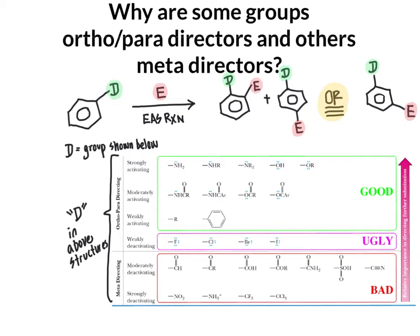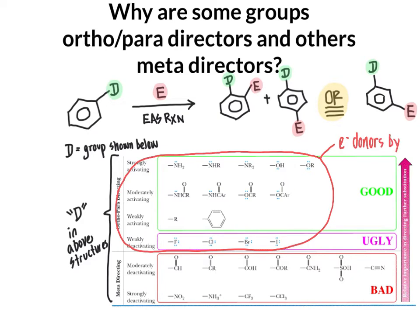So let's take a closer look at this reaction, evaluating why some groups are ortho-para directors and others are meta directors. The first thing I want to bring to your attention is that if we look at the top part of the chart — these ortho-para directors — all of these are electron donors by resonance or by induction, with resonance being the primary consideration and induction being a secondary consideration. So if something is electron donating by resonance but electron withdrawing by induction, it will still fall into the ortho-para director category because resonance is more important than induction.